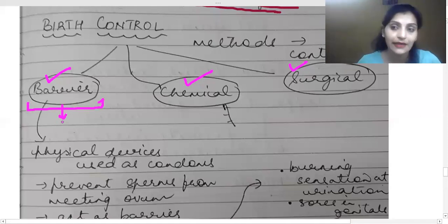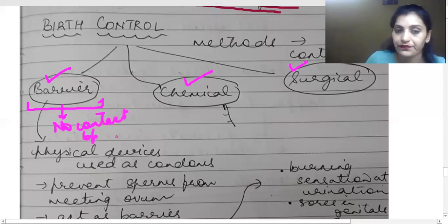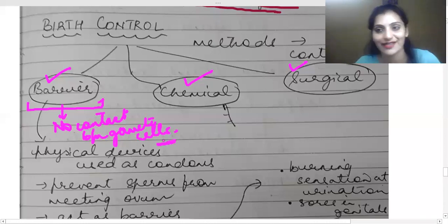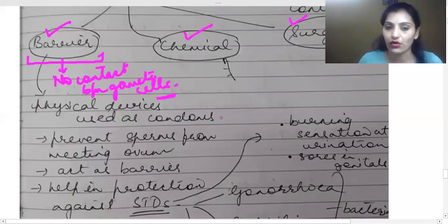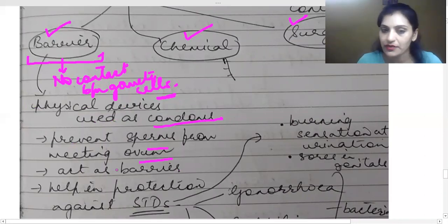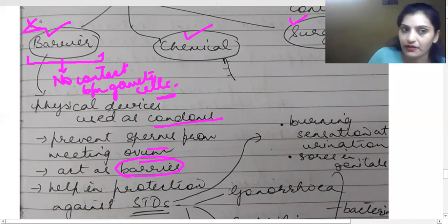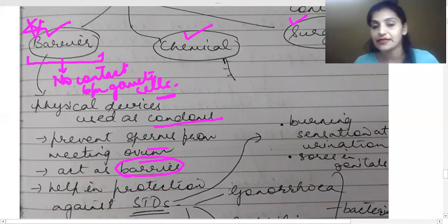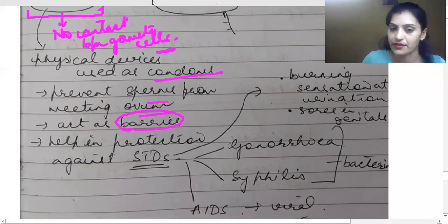It does not bring sperm and ovum into contact with each other. So there is no contact between the gamete cells. When there is no contact, then obviously there will be no fertilization. So there are physical devices used like condoms. They will prevent the sperm from meeting ovum and they will act as barriers and they will help in protection against the STDs. What are STDs? STDs are sexually transmitted diseases. So STD's full form you should remember, it is sexually transmitted diseases.